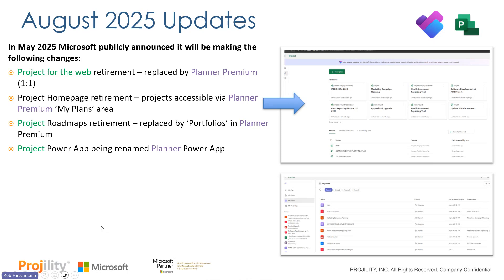The final change is that something called the Project Power App, which was sitting behind the scenes in Project for the Web, is being rebranded and renamed the Planner Power App. There is no change in functionality — just a change in branding and naming. So you can see that a lot of this is simply a rebranding and simplification of the different products Microsoft already has.